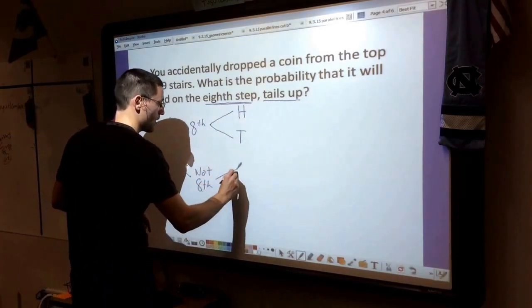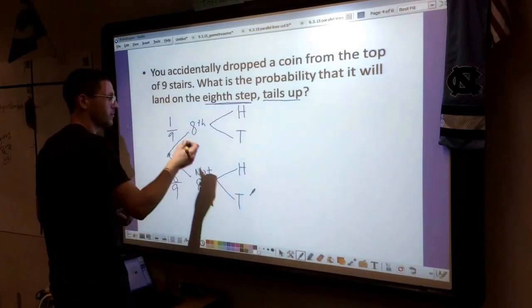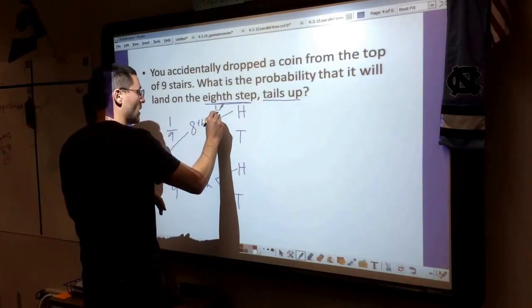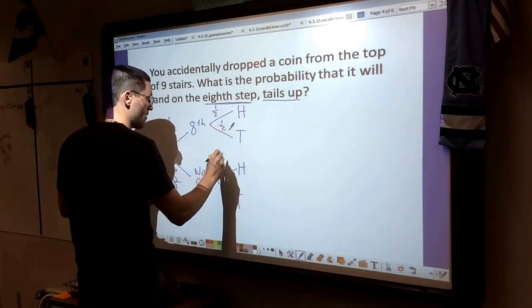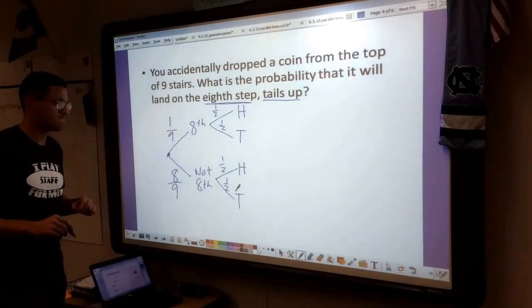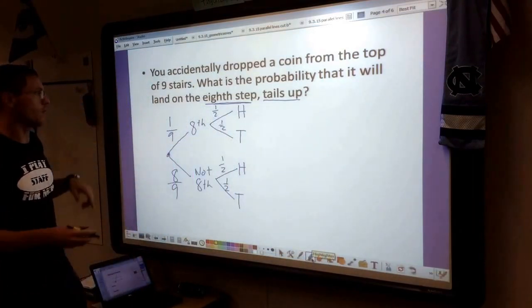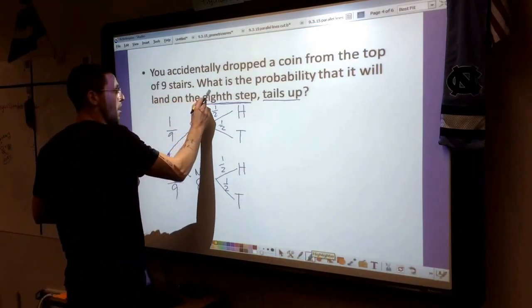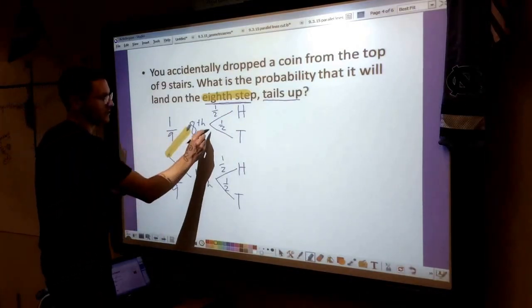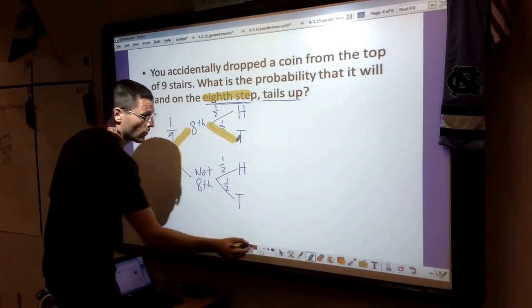Same thing down here. It can land heads up or tails up. When you flip a coin, it's a 1 in 2 chance, so all of these fractions are going to be 1/2. Now we're going to get out our highlighter and look for the trail of what we're looking for. It needs to land on the eighth step, and it needs to land tails up, which is going to be this pathway here.